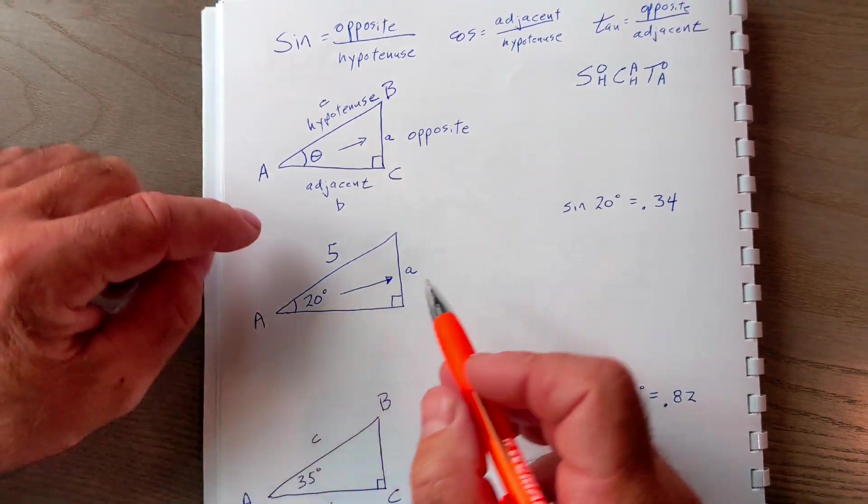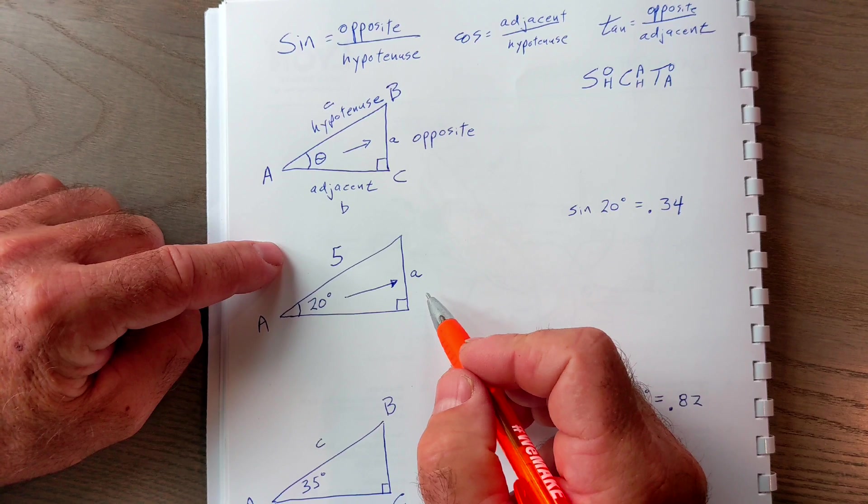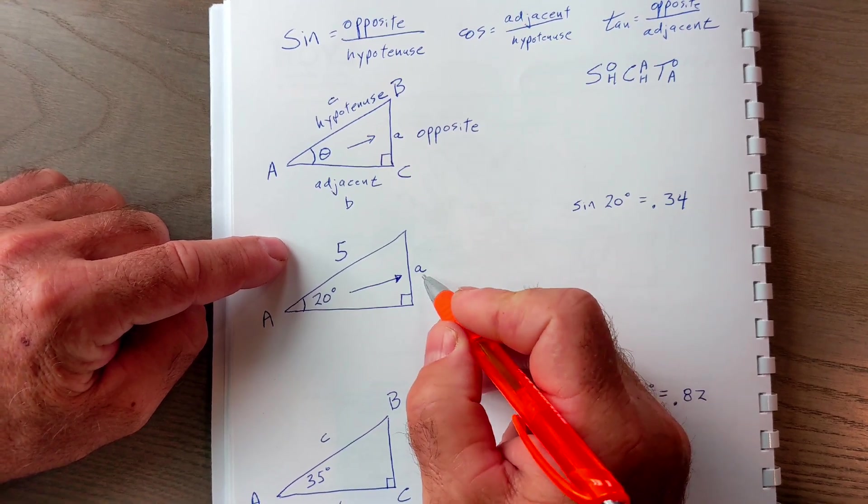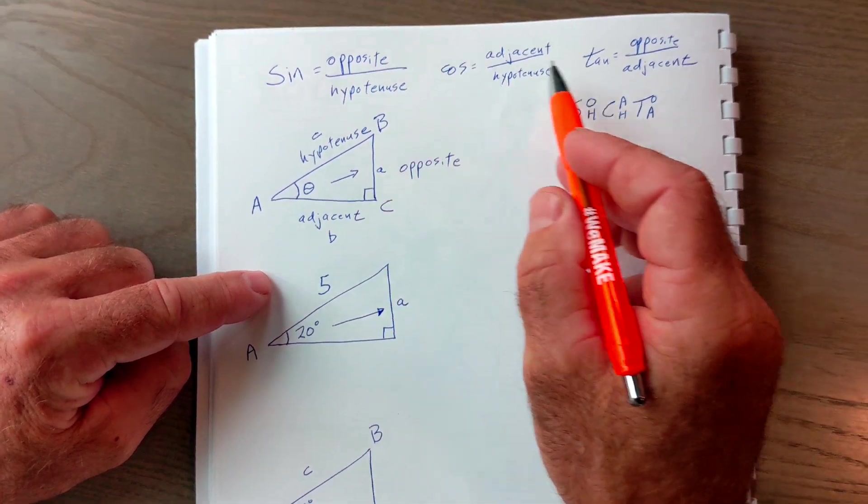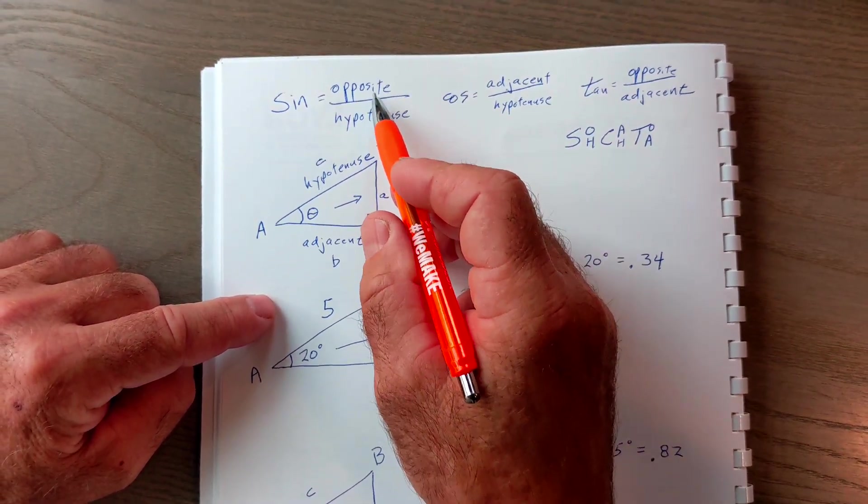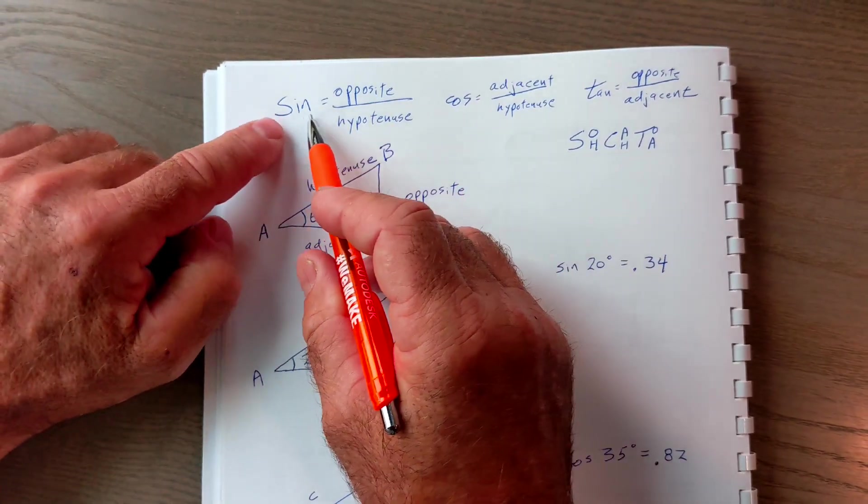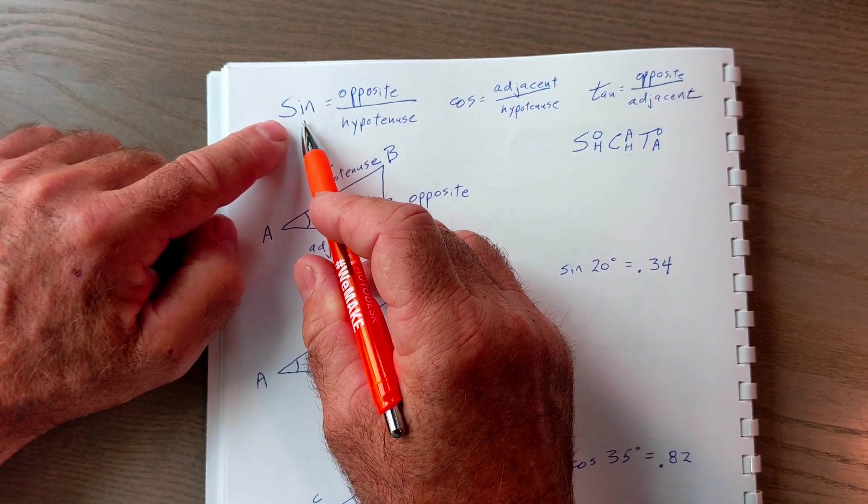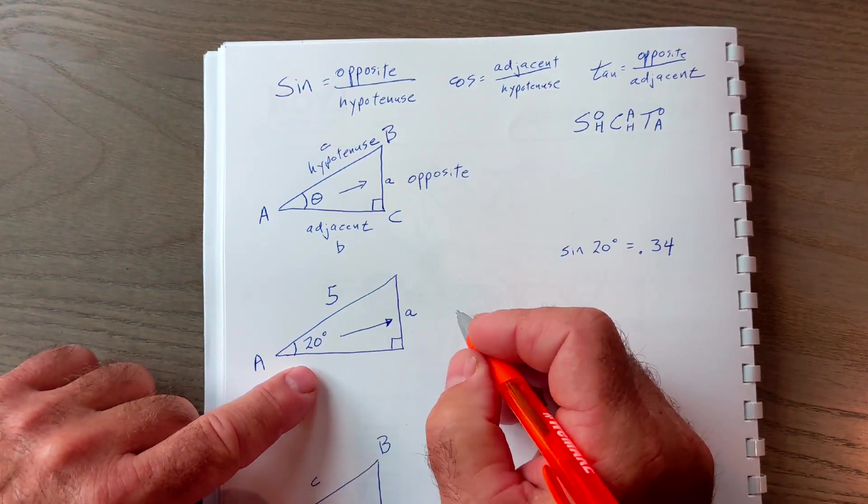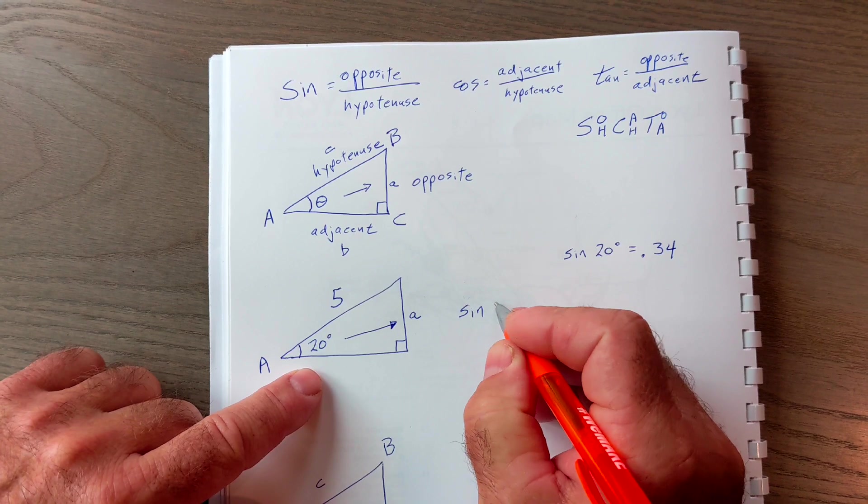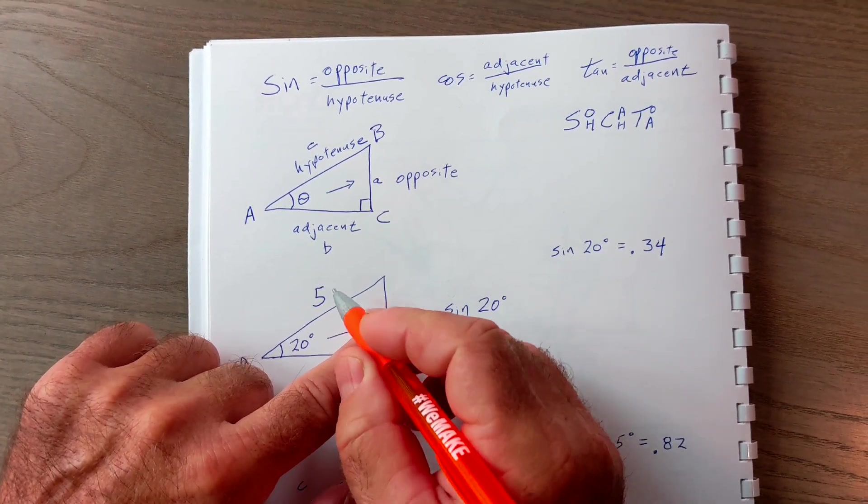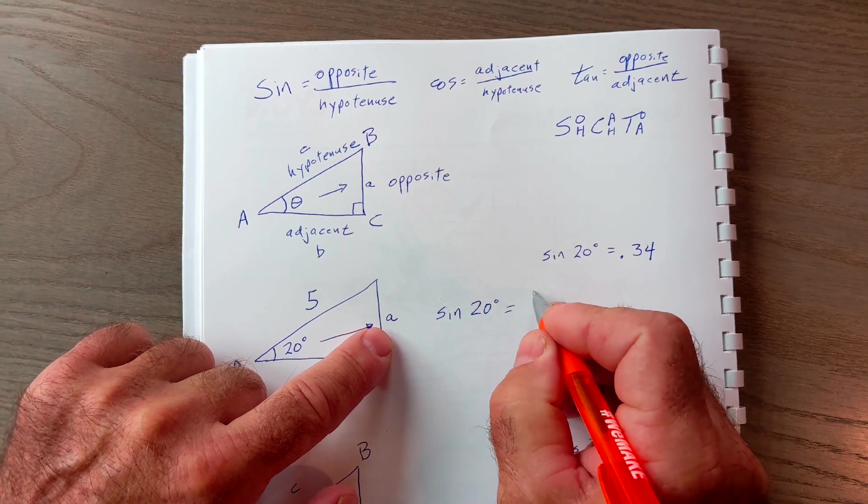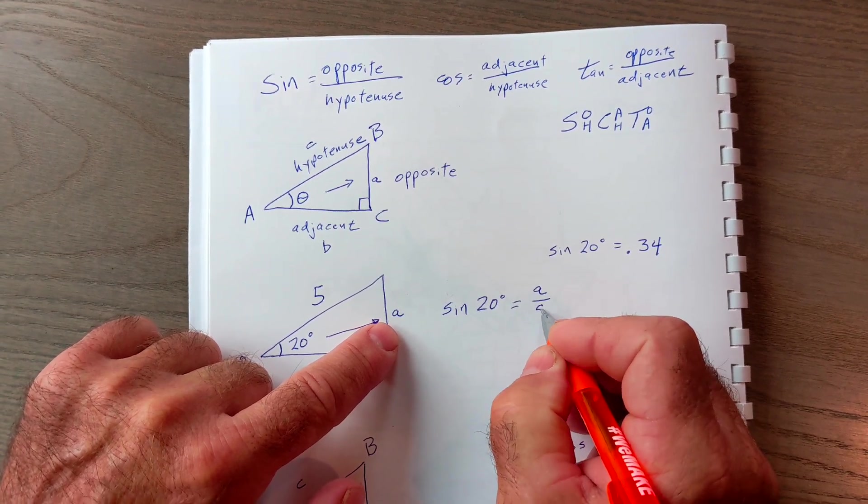But first thing I'm going to do is look at the pieces I have and the pieces I need. So I'm looking for an opposite side. I have a hypotenuse. I go up here. Opposite hypotenuse is this fraction here. So it's sine. So I'm going to use the sine function. So I'm going to say sine of 20 degrees is equal to the opposite over the hypotenuse. So it's equal to the fraction A over 5.